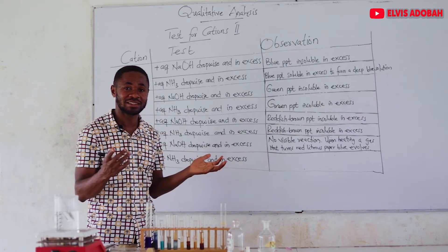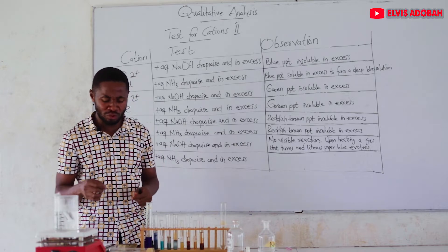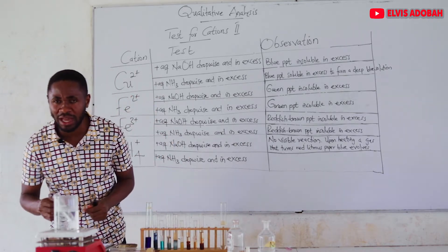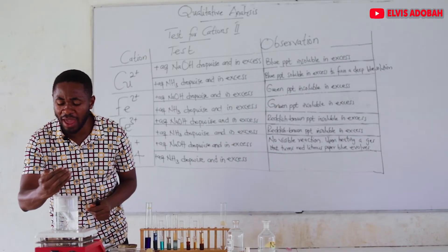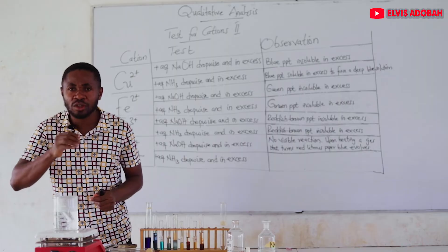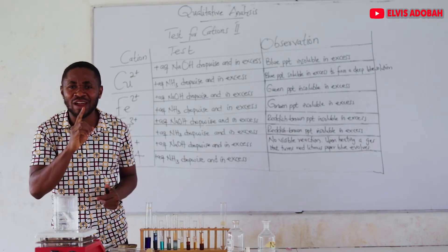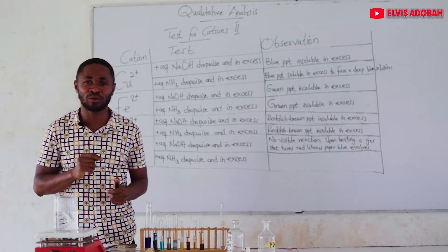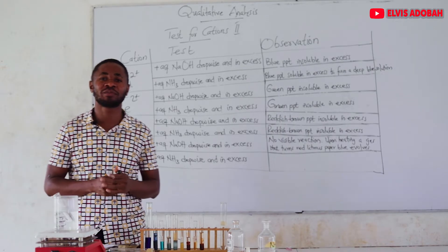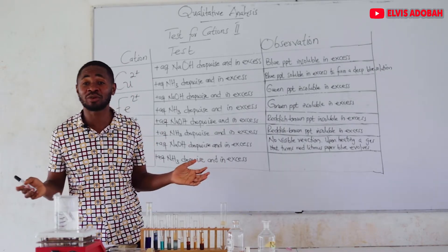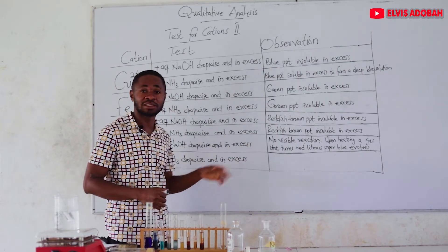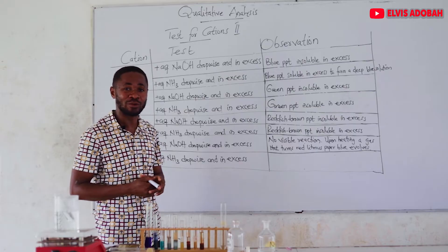Ammonia is a basic gas. Apart from using the red litmus paper, when you bring the mouth of the test tube closer to your nostrils, you will sense a very pungent smell — a smell just like urine. That characteristic pungent smell is ammonia gas. So that is the test for ammonium ion.